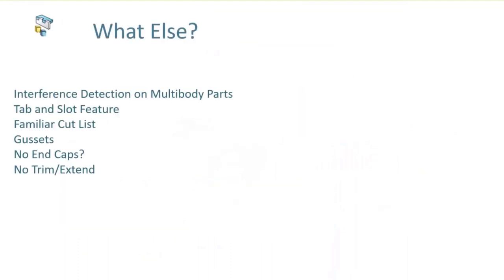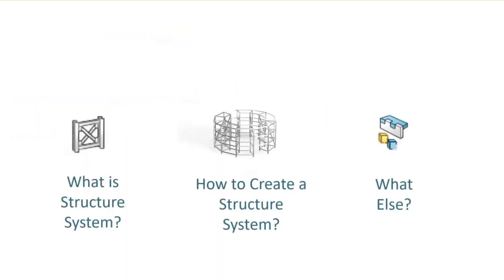To recap what we looked at: interference detection on multibody parts — not just limited to structure systems, but multibody parts in general. The tab and slot feature for self-fixturing. Once we have the structure system, the cut list works just like in Weldments. Some Weldments tools like gussets are available, but a couple aren't — end caps and the trim and extend tool. So hopefully you guys were able to pick up a thing or two. That's what we had today on SolidWorks Structure System.